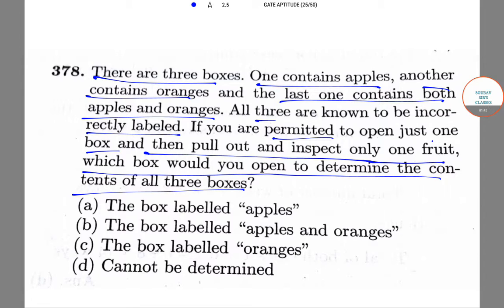Now, it is given that all three boxes have been incorrectly labeled. Then, the correct answer would be that we will open the box which is labeled as apples and oranges. Now, let us suppose this box contains apples. Then, we are left with two boxes labeled oranges and apples. One of these two boxes will have oranges and the other will have apples and oranges.